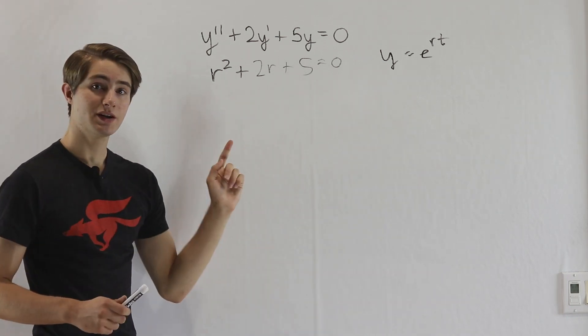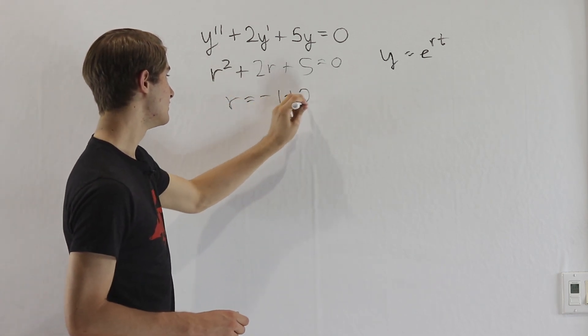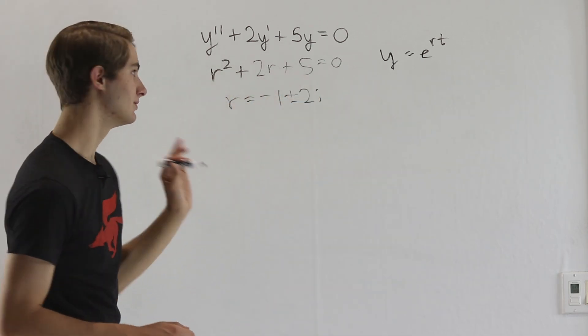We can't factor this directly, but we can use the quadratic formula. And that will get us to the solutions of r equals negative 1 plus or minus 2i.